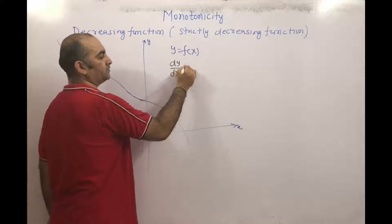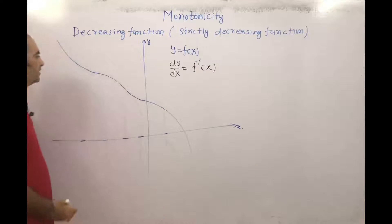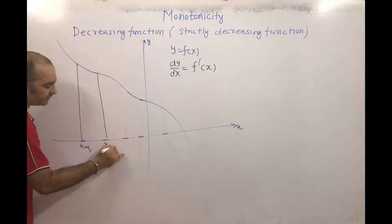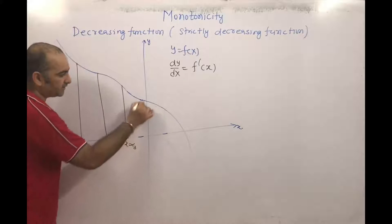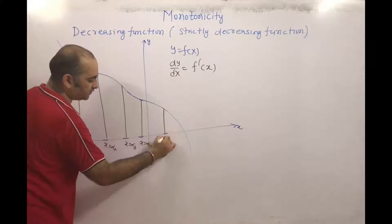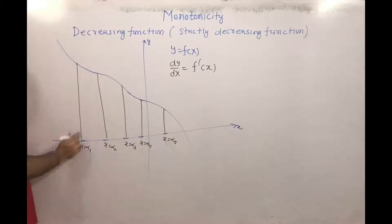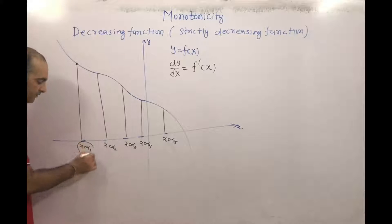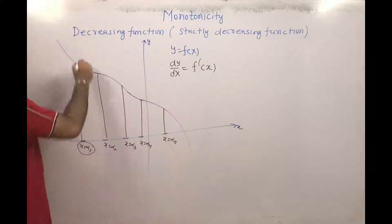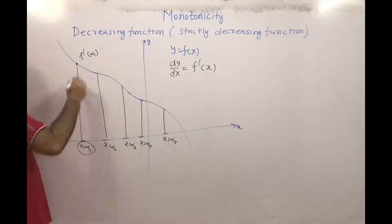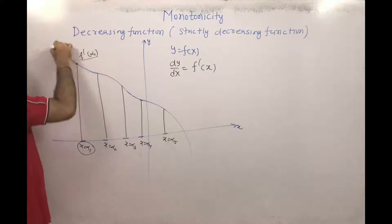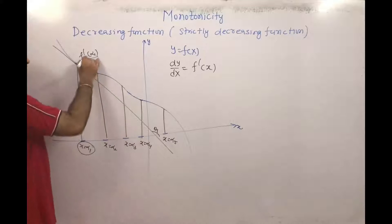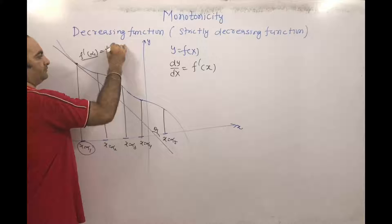To find the slope of the tangent at any point, we differentiate: dy/dx = f'(x). On this graph, we have points x = alpha1, alpha2, alpha3, alpha4, and alpha5. At the point x = alpha1, the slope of the tangent is f'(alpha1). If we draw the tangent there, it makes an angle theta1 with the positive x-axis, so f'(alpha1) = tan(theta1).